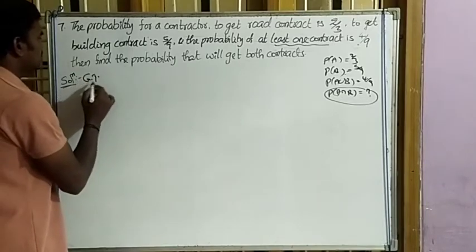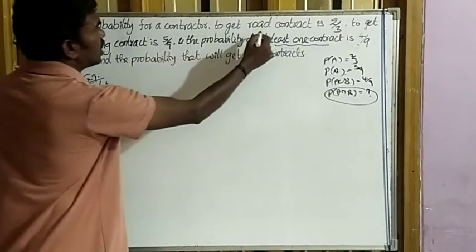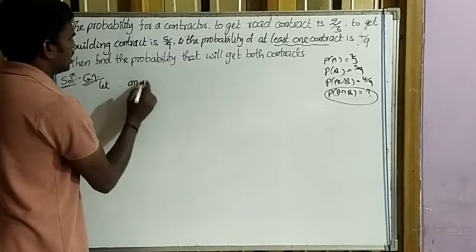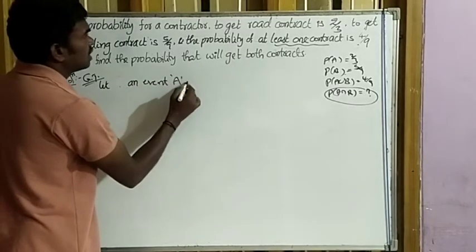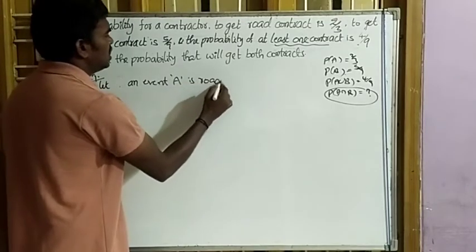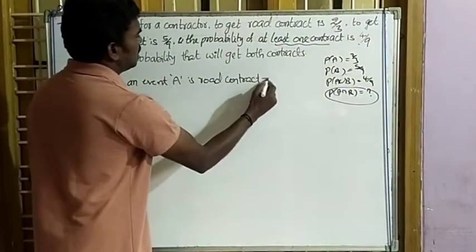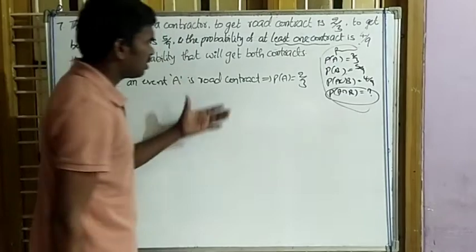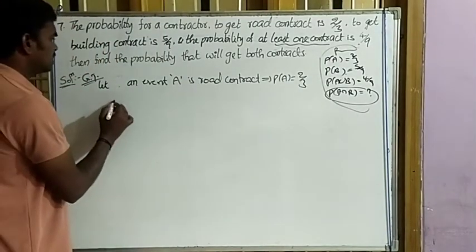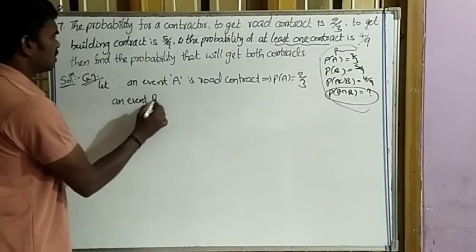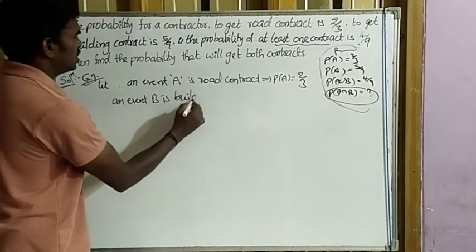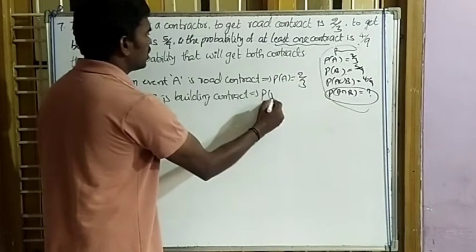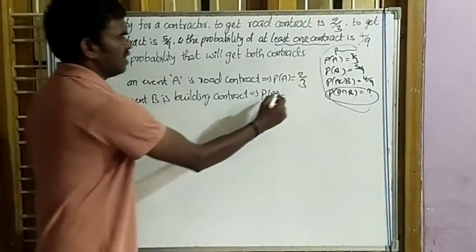Let event A be road contract, then P(A) = 2/3. Let event B be building contract, then P(B) = 5/9.